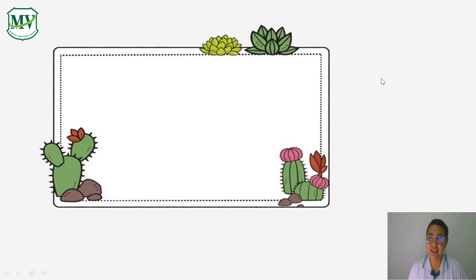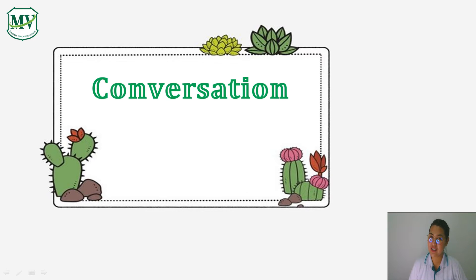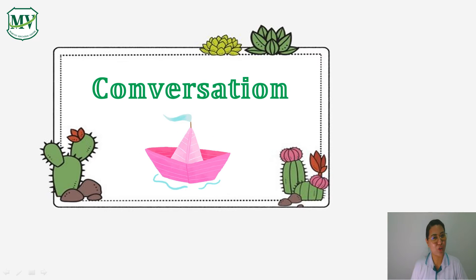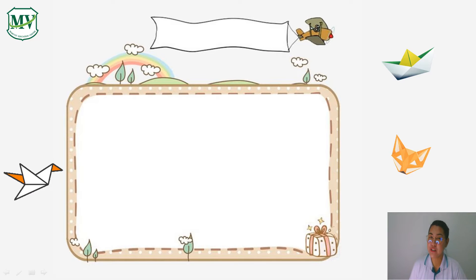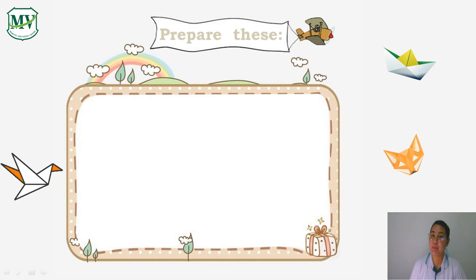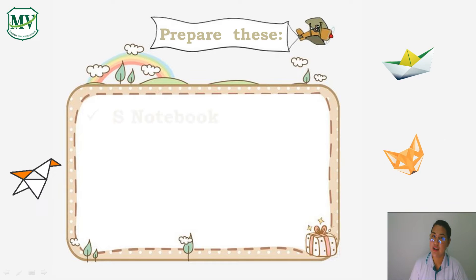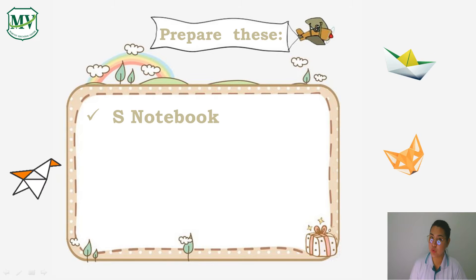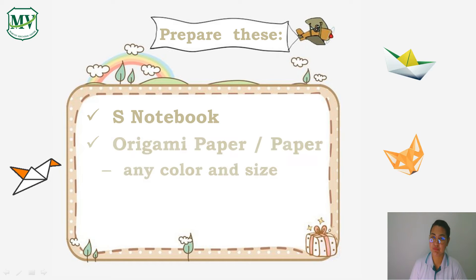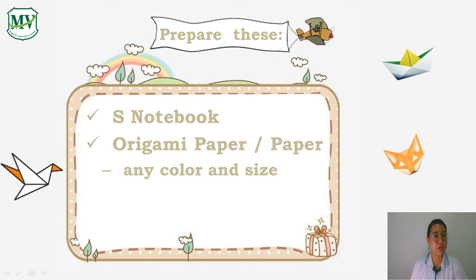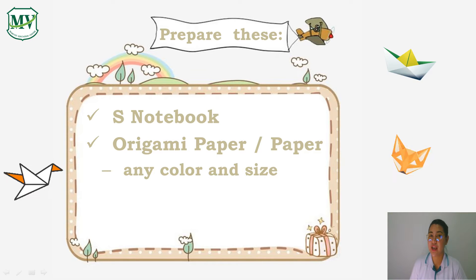Good day boys and girls, my name is Teacher Pia and today I'm going to be your conversation teacher. Before we start with our lesson, I want you to prepare: number one, your ESL notebook or your English schoolwork notebook; number two, an origami paper or a plain paper in any color and size — you can use A4 paper if you want.